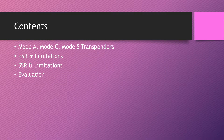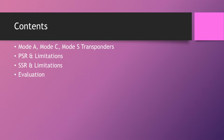The contents of this video: we're going to look at Mode A, Mode C, and Mode S transponders. We'll look at primary surveillance radar and its limitations, then secondary surveillance radar and its limitations, and finally an evaluation of all three together.